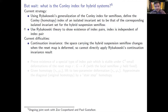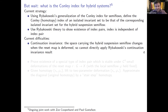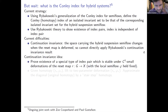A current difficulty for continuation invariance: when you deform the reset map, the very state space carrying the suspension semi-flow changes (it is defined as a quotient along the reset map), and the homeomorphism type can discontinuously bifurcate. This prevents direct application of Rybakowski's continuation invariance result. Work is in progress; the approach is to construct index pairs stable under small C⁰ deformations of the reset map.